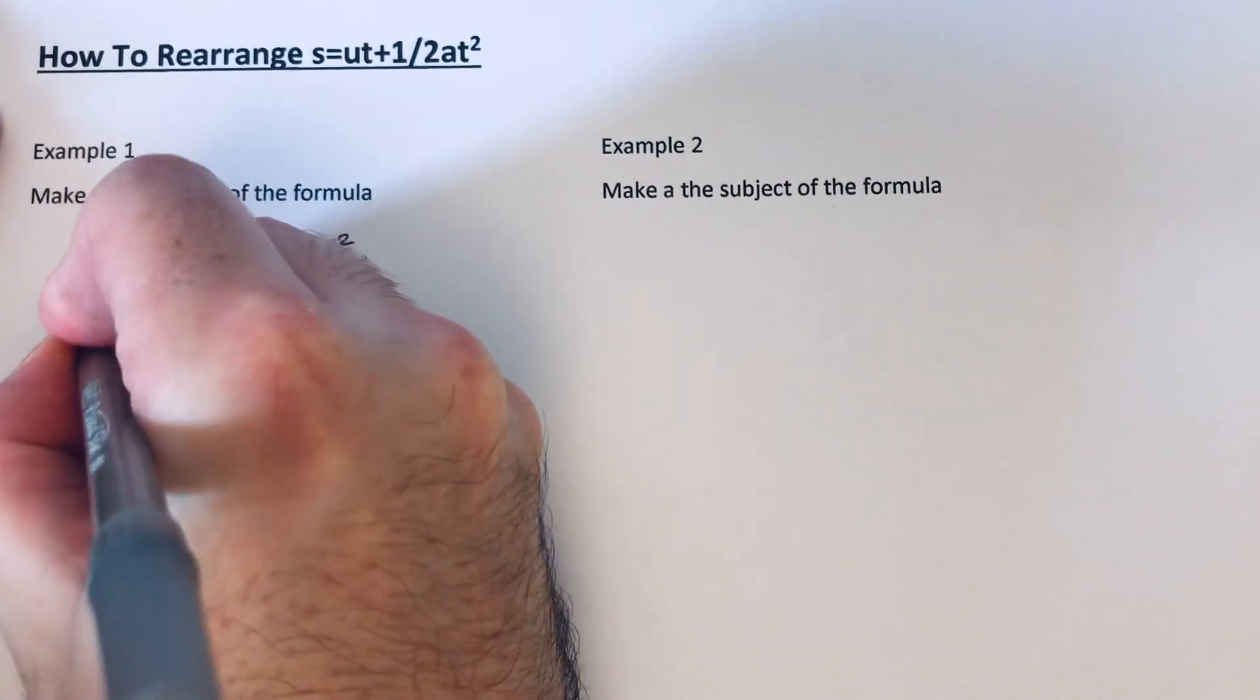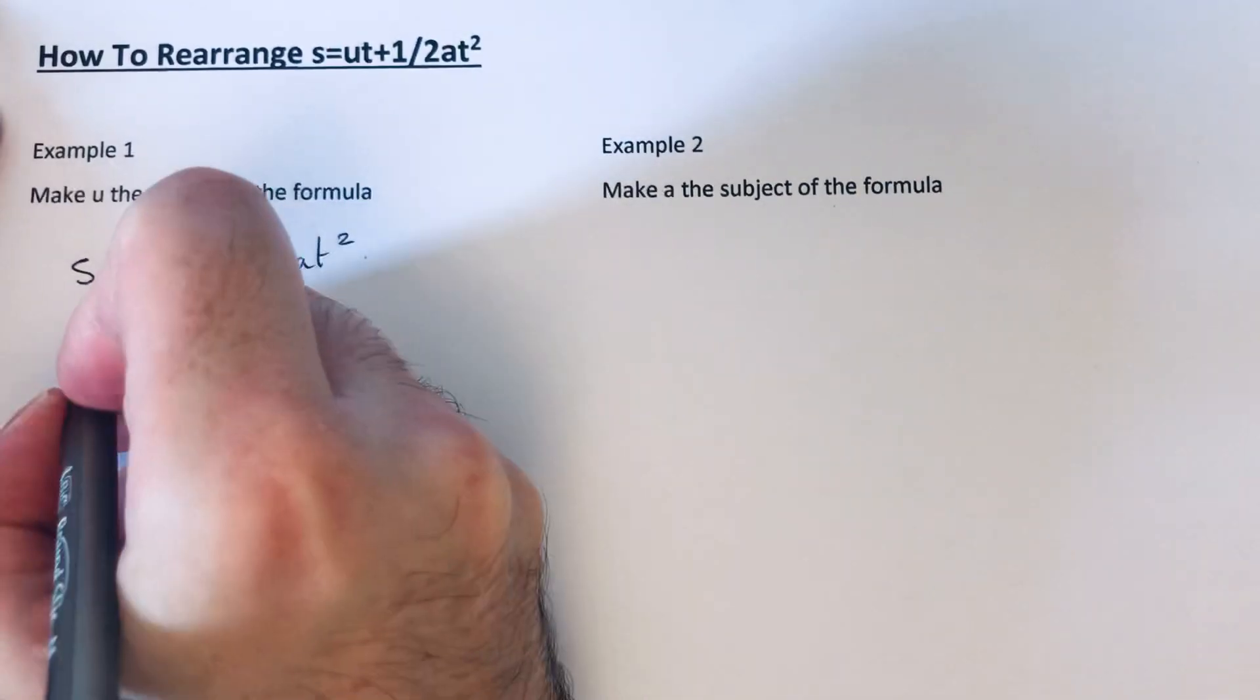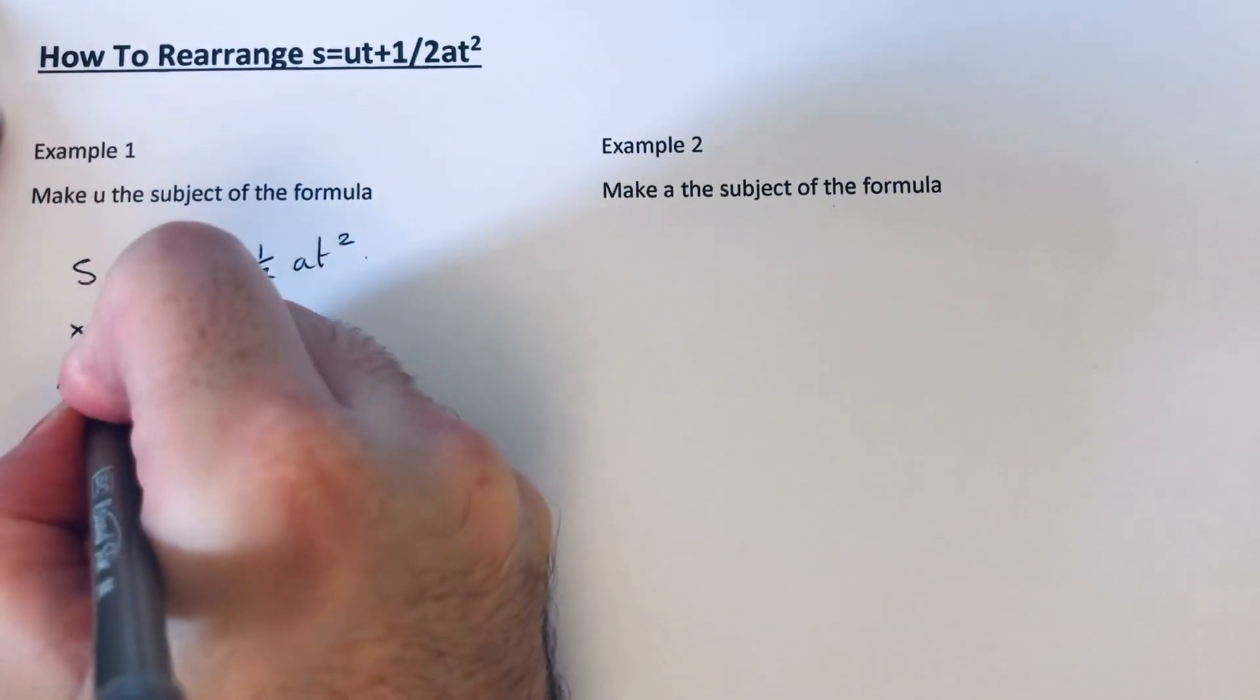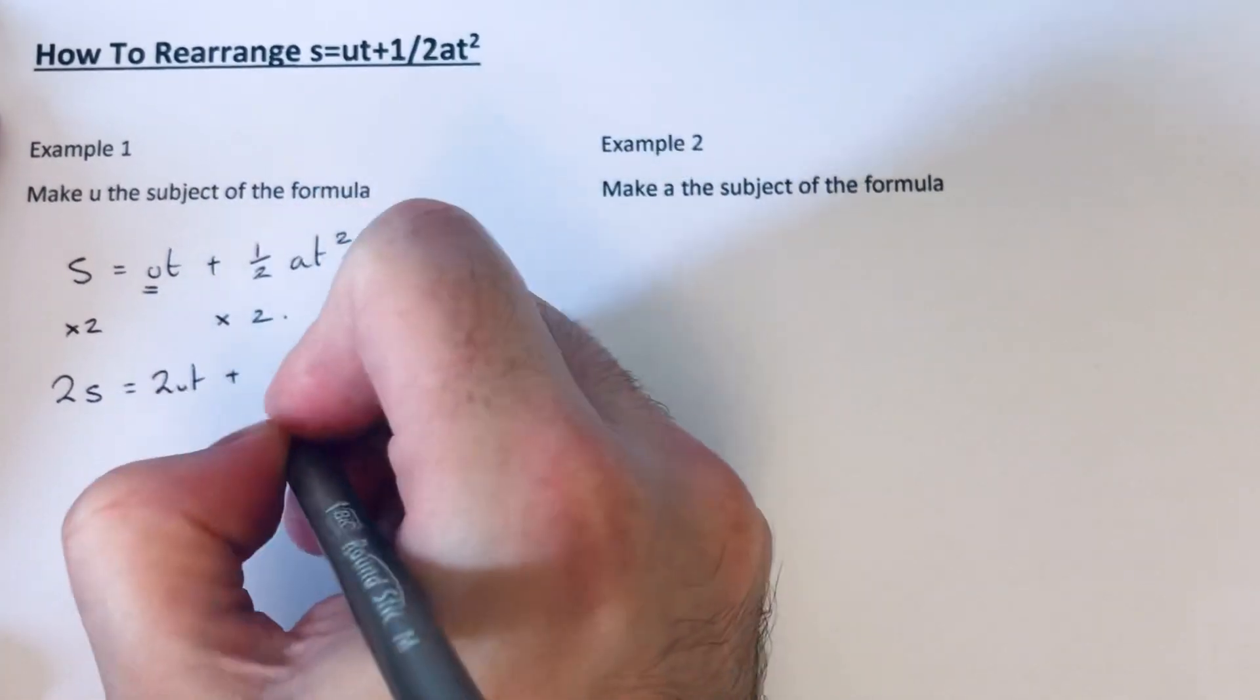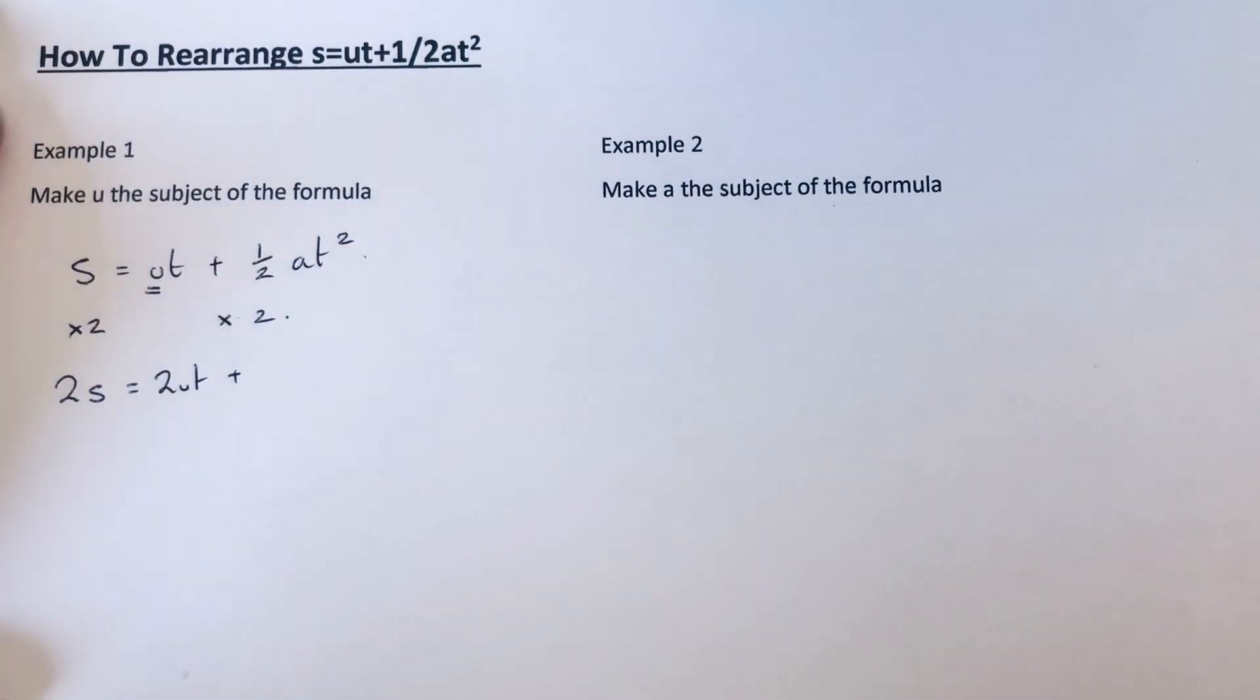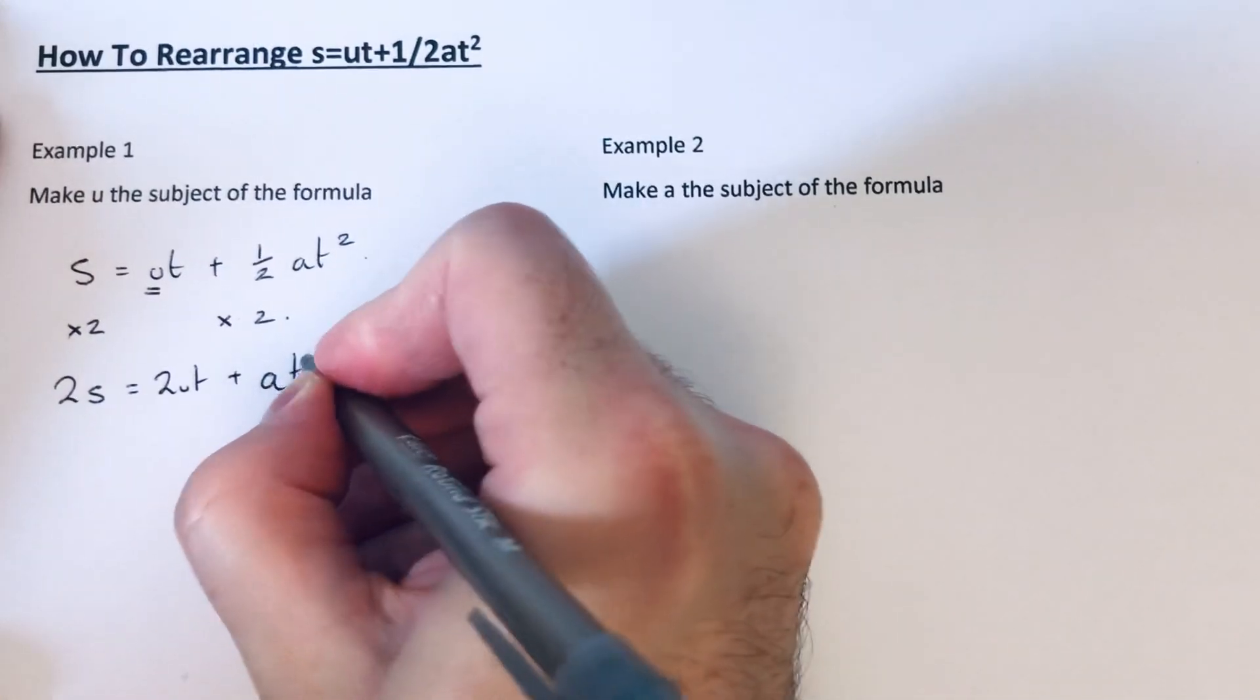So I'm going to times both sides of the formula by 2. So 2 times s is 2s, 2 times ut is 2ut, and that will cancel out the half if we times that by 2, and that will just give us at squared.